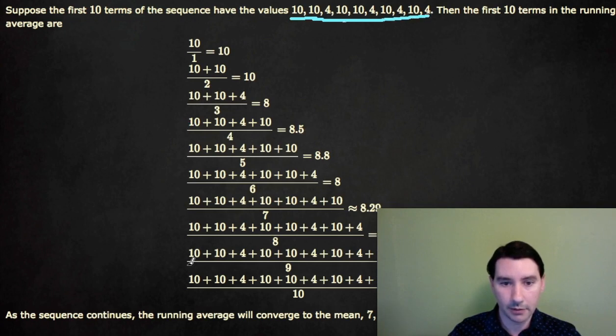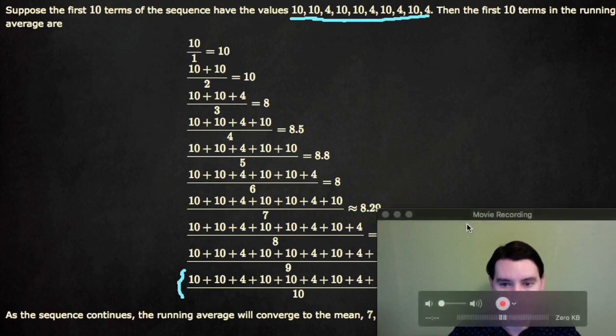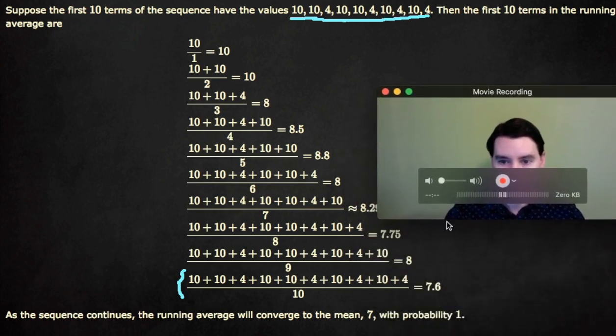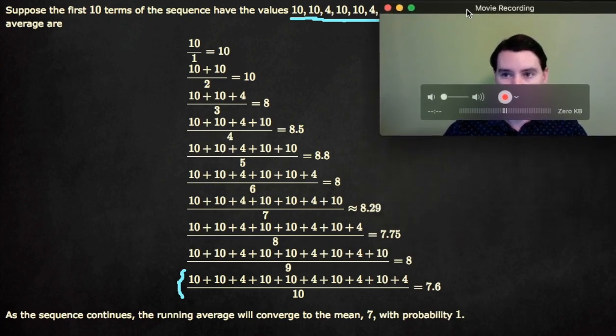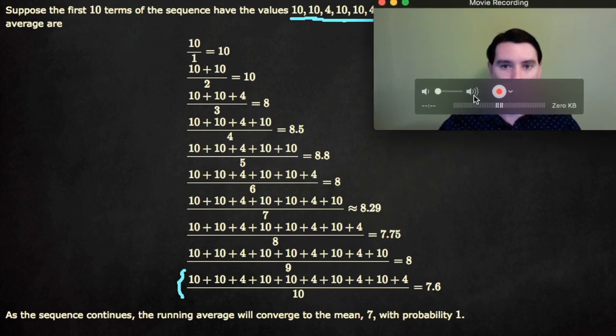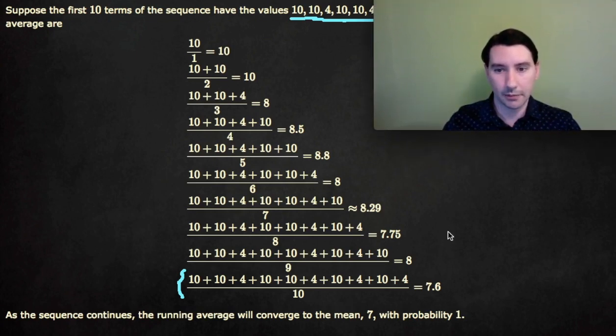And once we go all the way down to 10 numbers, we would add up all of these numbers and divide by 10, which gives us 7.6. With probability 1, the sum will eventually converge to 7, as long as the numbers actually have that distribution that there's always a one-half chance of a 10 and a one-half chance of a 4, and that the numbers are independent of one another.